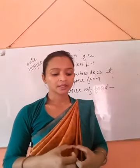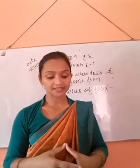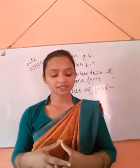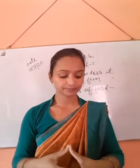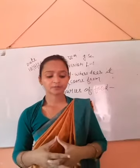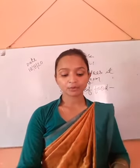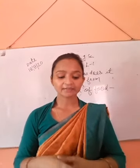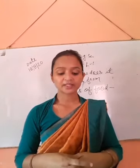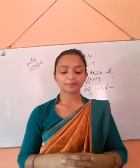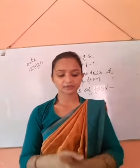Which plants give us different food items like cereals, pulses, oils, vegetables, fruits, spices, sugar, tea and coffee? Which parts of plants are eaten, which plants have more than one edible part, and which food items are eaten raw, uncooked, and which ones after cooking, boiling or processing? These are the questions and you will find out the answers.